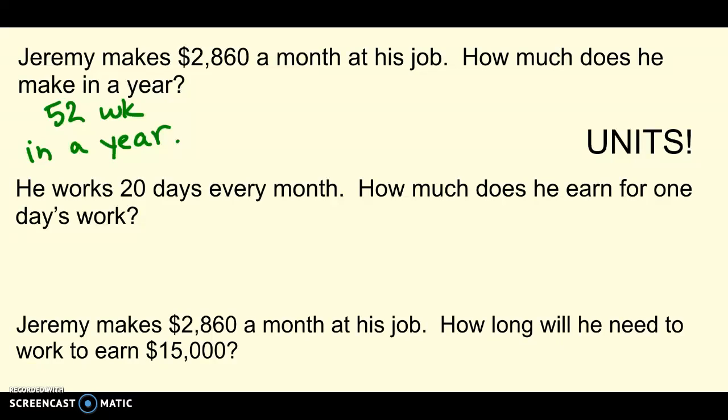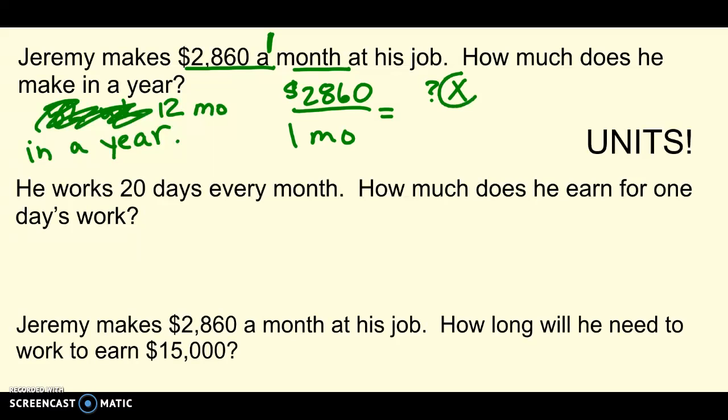The next three we'll set up together quick. And, then you can just finish the cross multiplying and see what you get for an answer. So, Jeremy makes $2,860 a month on his job. How much does he make in a year? Sorry, that's irrelevant information. You need to know that there are 12 months in a year. So, I can set it up. I know how much money he makes in a month. Right? One month. There might be an invisible one in there. So, $2,860 in one month. How much does he make? Hmm. I don't know. That's my X. Right? In a year. And, we said that was 12 months. The units have to match. So, double check. I have dollars over months. This is going to be how many dollars in 12 months. Let's set him up and then you can go back and work him out.